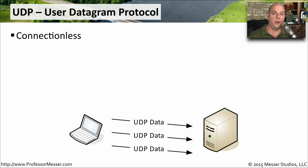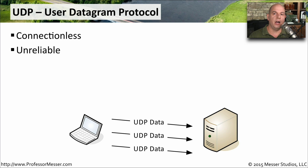User Datagram Protocol, or UDP, is a very different protocol than TCP. UDP is connectionless — there's no formal startup process to set up a communication to another device, and no formal teardown process for the flow. UDP simply sends information to another device without any type of warning whatsoever. UDP is also what we call an unreliable protocol. This doesn't mean UDP is worse than other protocols — it works exceptionally well — but there are no acknowledgments to the data sent, so the originating station has no idea if the information reached the other side.